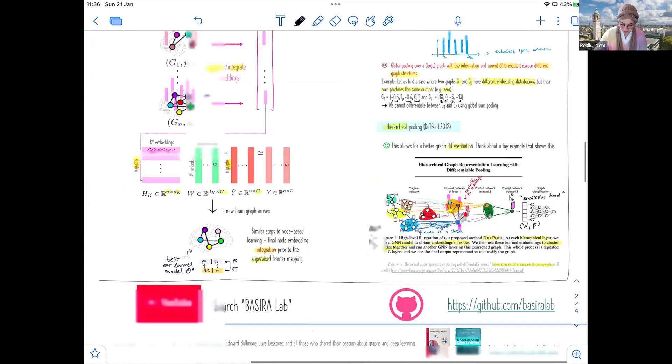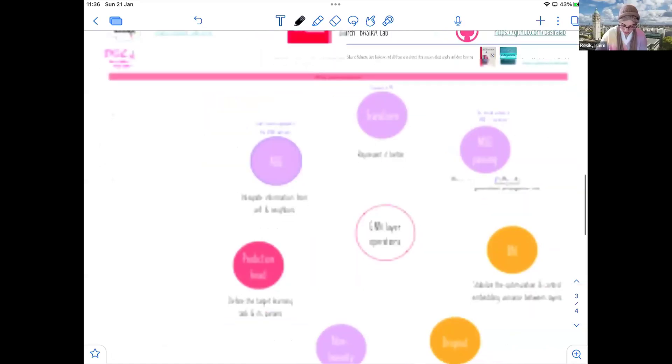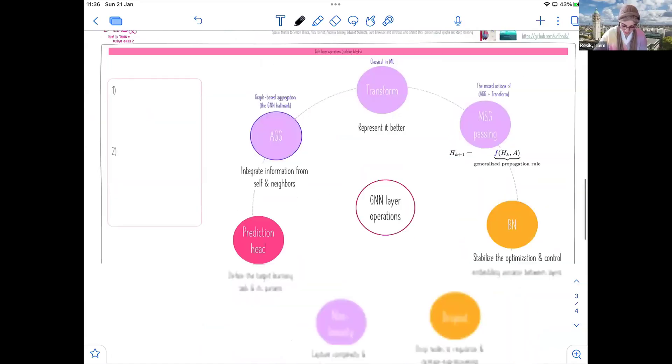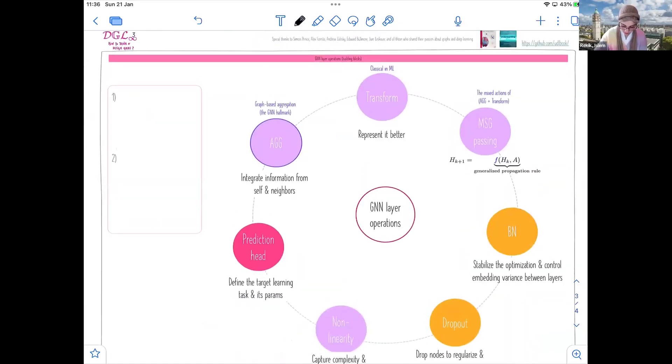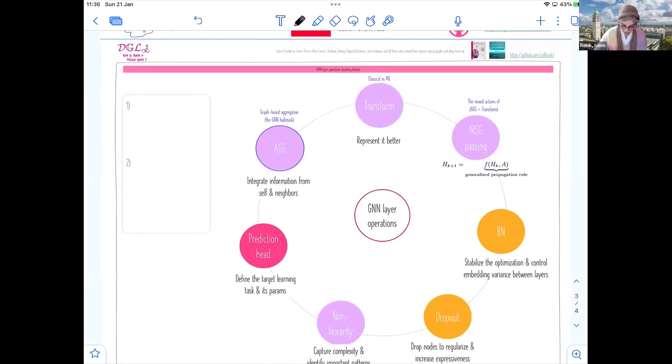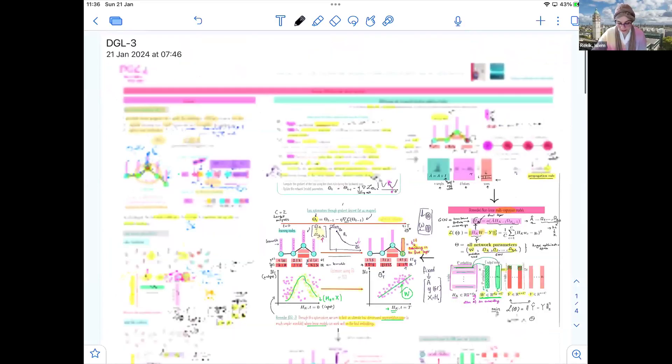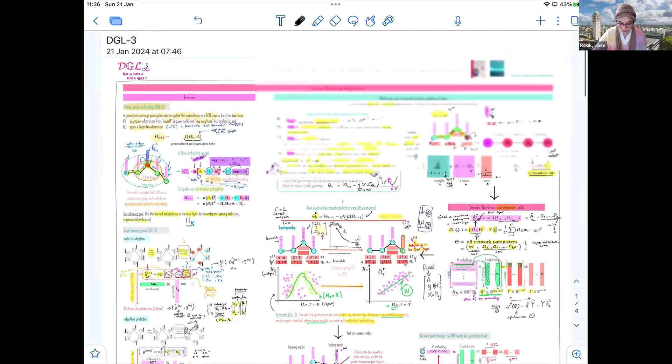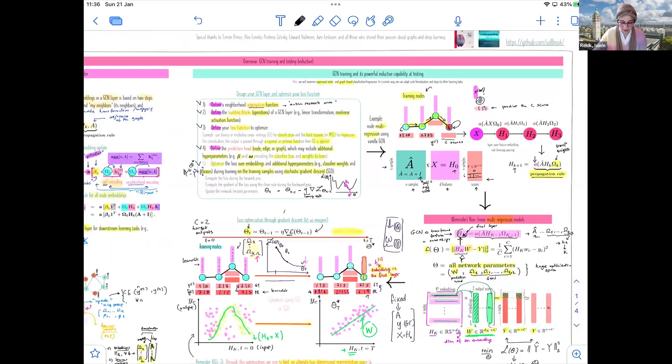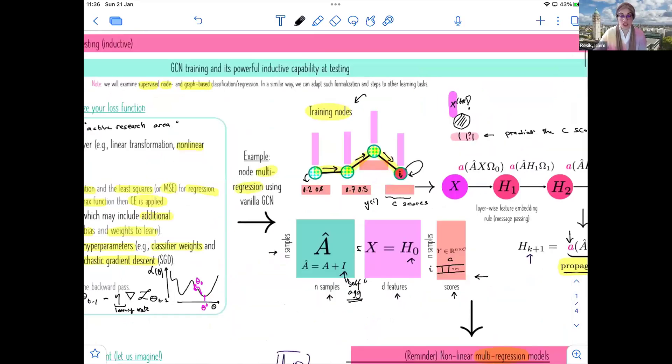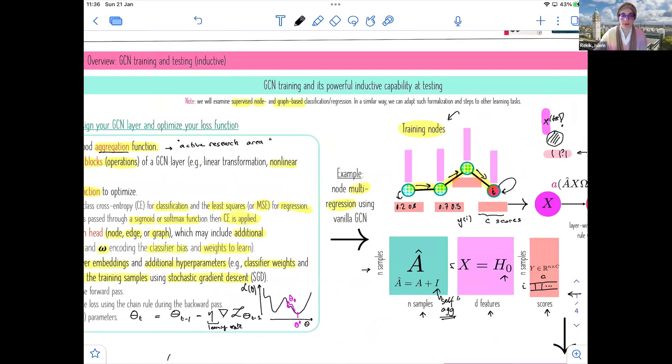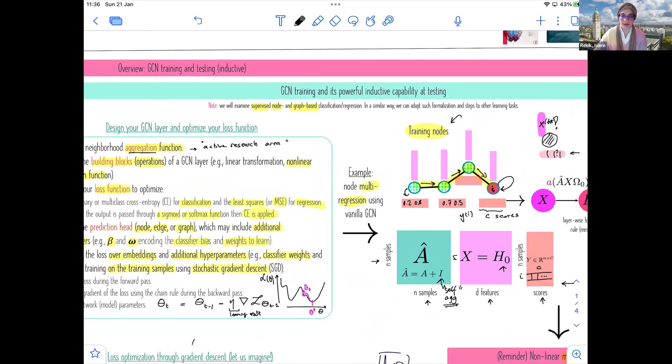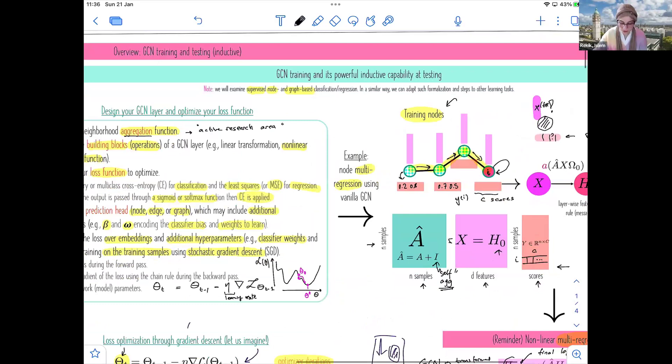Now the last part. So far we have seen in this lecture the GCN training paradigm, how to train and optimize GNN models in general. We also explored their powerful inductive capability, and we have seen different examples.